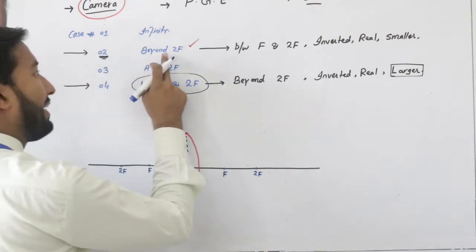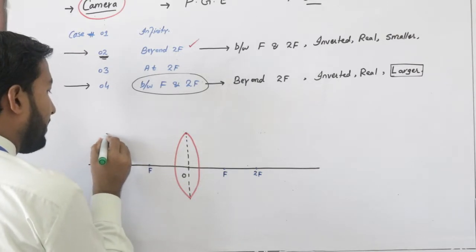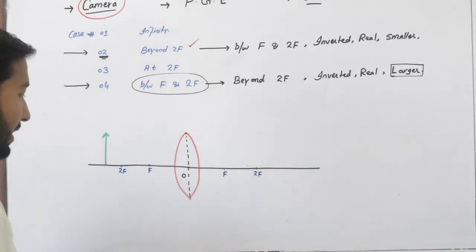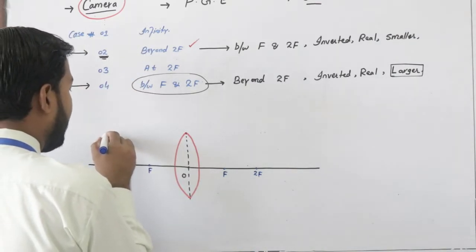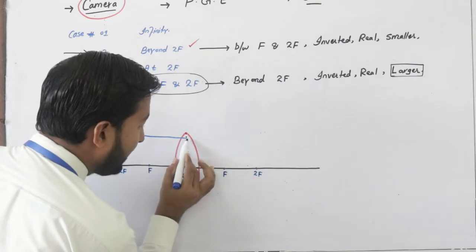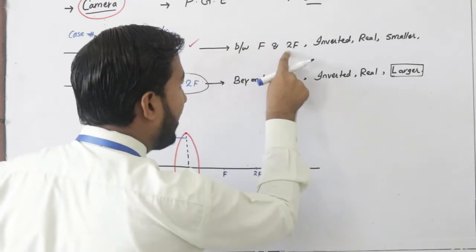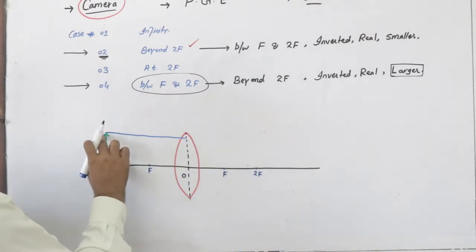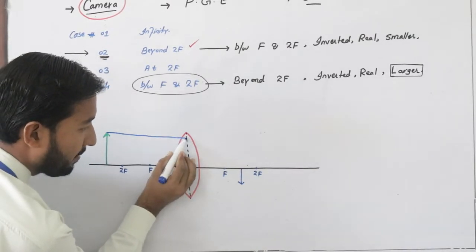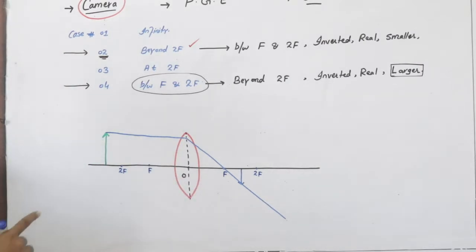اس F سے اتنی ہی distance پر 2F ہے، اور دوسری طرف بھی 2F ہوگا۔ Object is placed beyond 2F — تو object کو 2F سے پرے رکھ دیتے ہیں۔ Image formation کے لیے تین rays بنانی ہیں: پہلی principal ray، دوسری straight ray، اور تیسری oblique ray۔ Principal ray parallel to principal axis جاتی ہے اور lens سے refraction کے بعد principal focus میں سے پاس ہوتی ہے۔